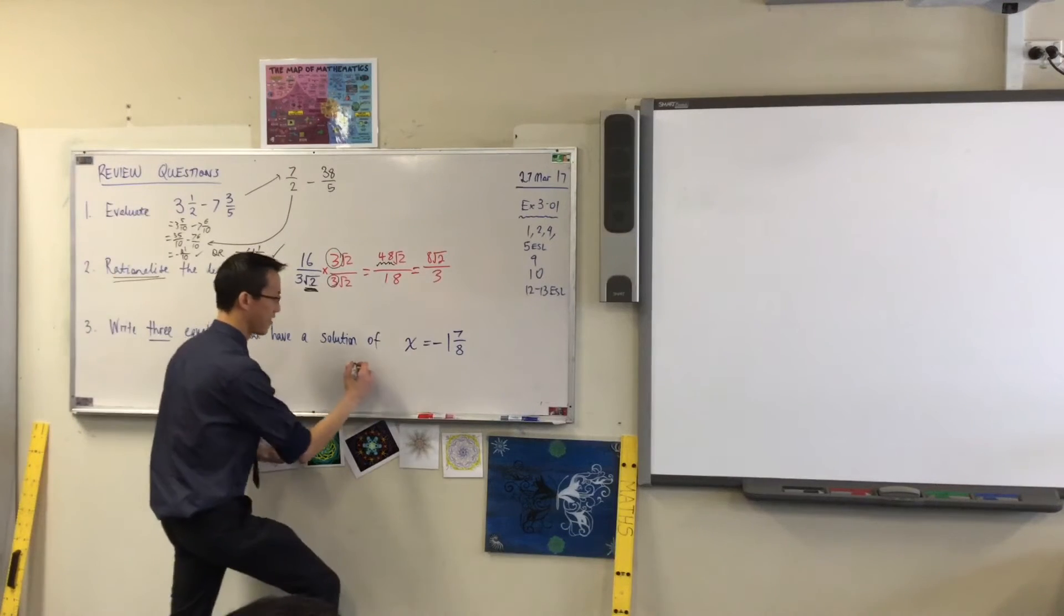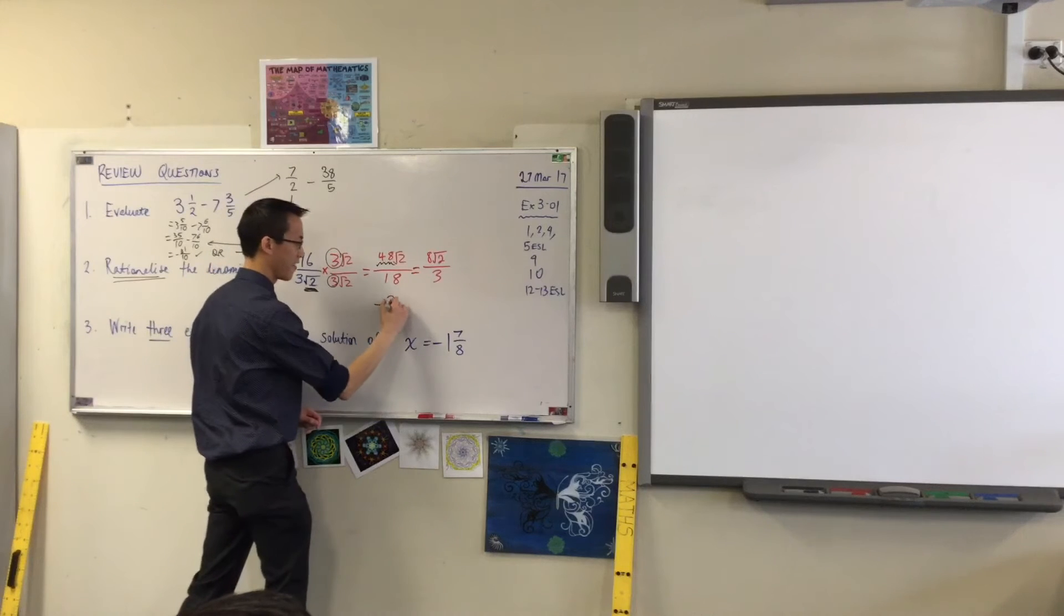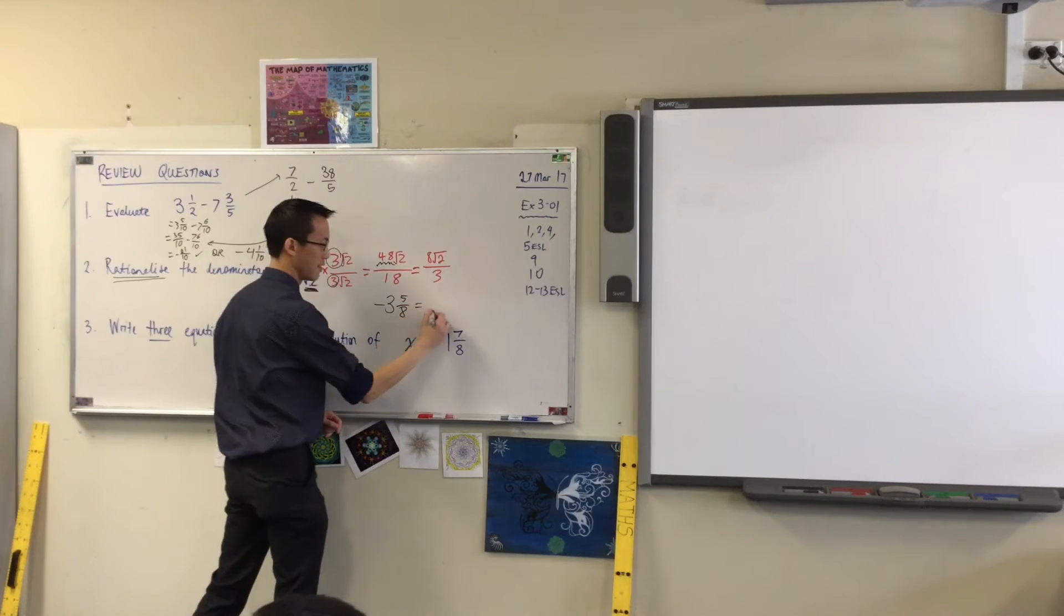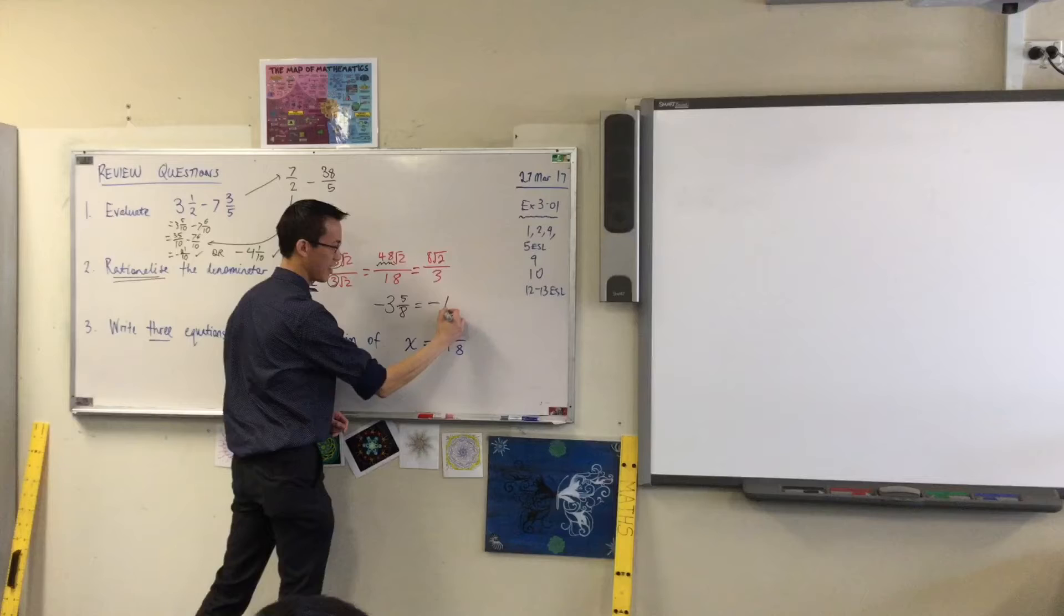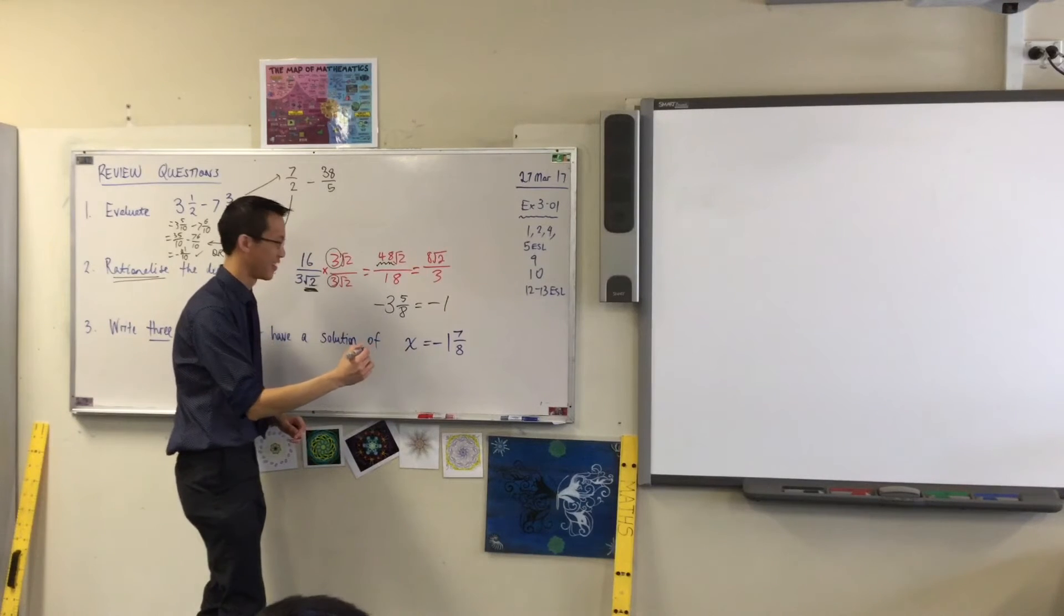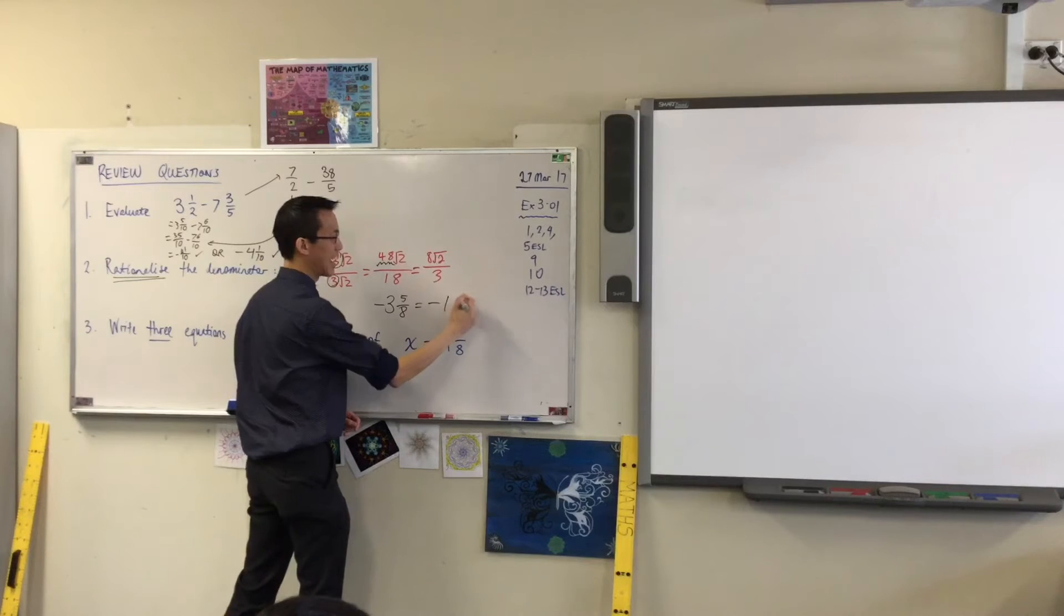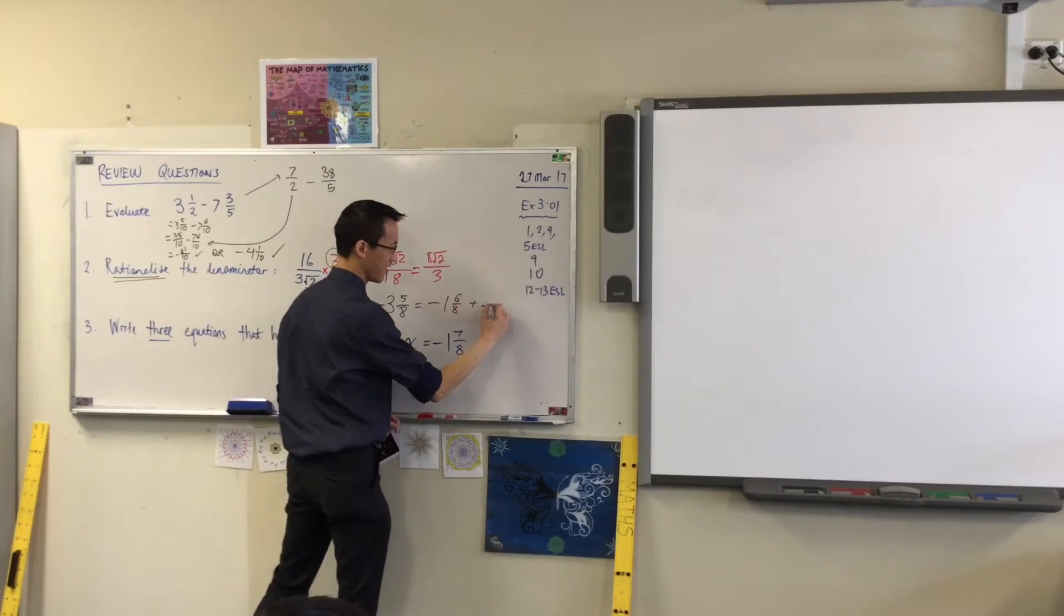Minus, it's a mixed number. Yeah, that's okay. Minus what? 3 and 5 over 8. Yep. Okay. Equals to, equals to minus 1, 6 over 8. Hold on, minus 1, no, minus 1, yeah, 6, and then the, it's a mixed number again. Okay, and 6 over 8. Yeah, plus an x.